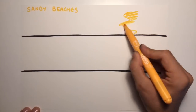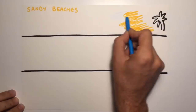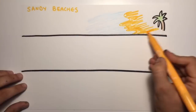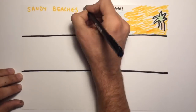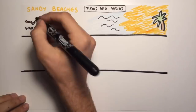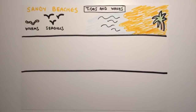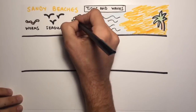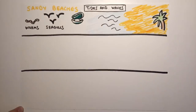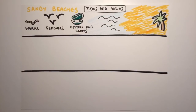Some marine ecosystems are sandy beaches. These are affected by tides and by waves. Sandy beaches are the home of seagulls, oyster catchers, sand fleas, sandworms, and clams.